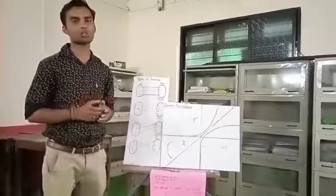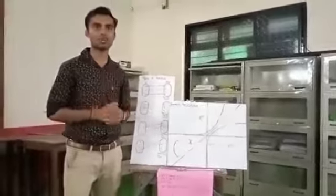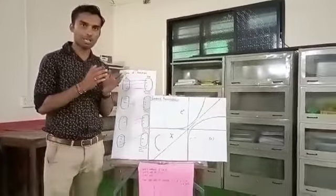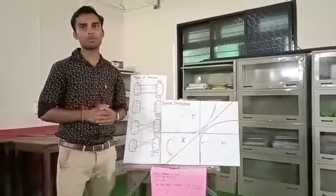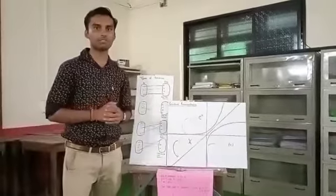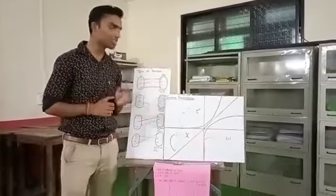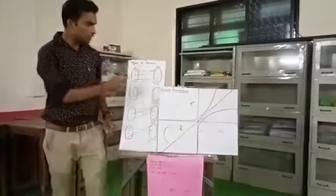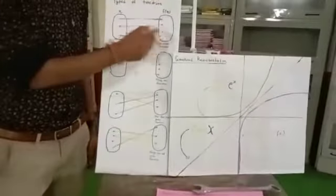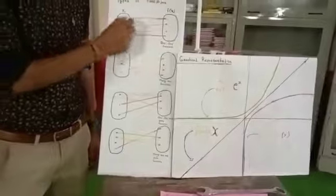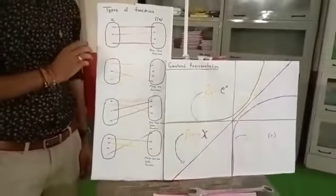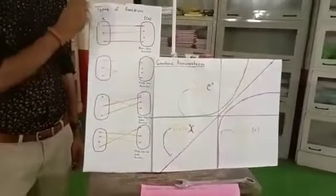The set means the collection of numbers. If you know the set, it depends on the function. Now, the function means set A — it is an independent function — and set B, it is the dependent function. It is called the function.